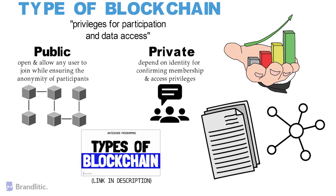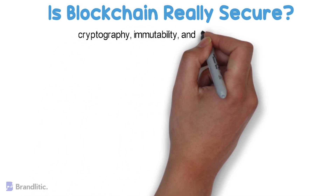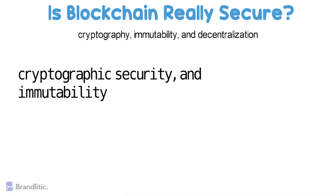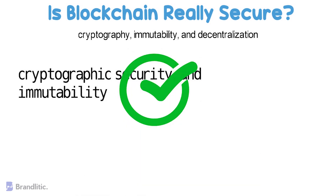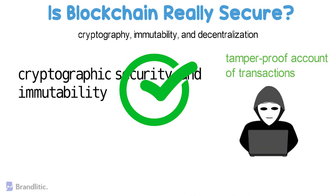Before jumping into blockchain security issues, let me first answer the fundamental question: is blockchain really secure? Blockchain technology is often described in terms of cryptography, immutability, and decentralization. With cryptographic security and the assurance that no one can modify data without the knowledge of other participants, blockchain definitely seems secure. However, this does not mean that blockchain is not vulnerable to cyber attacks and security frauds — people with malicious intent could exploit blockchain security vulnerabilities to their advantage.